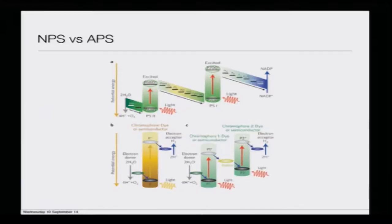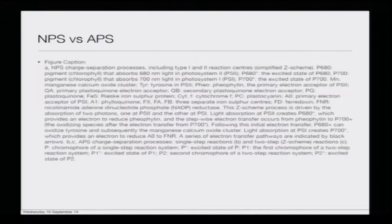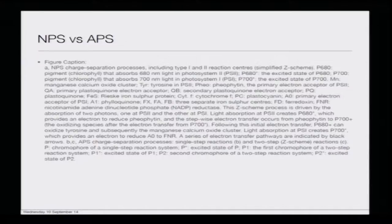You can do the same thing by mimicking or deriving inspiration from this system, by having two different dyes — chromophore one and chromophore two — and exactly following the mechanism of the Z-scheme which is followed by the natural photosystem. This is the overall scheme, and the caption of this figure from the Nature Photonics paper describes the two-step Z-scheme of reactions: the chromophore excited state in a single-step reaction.